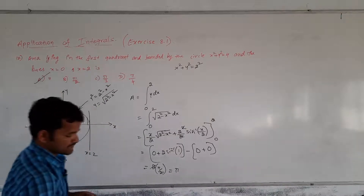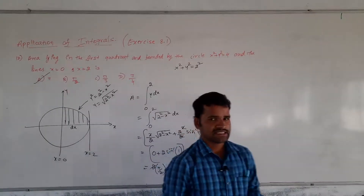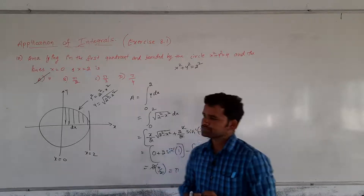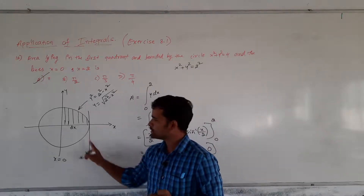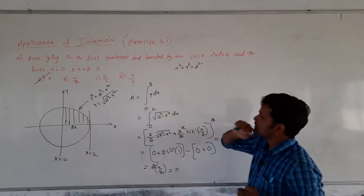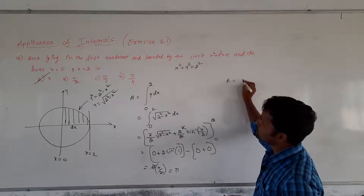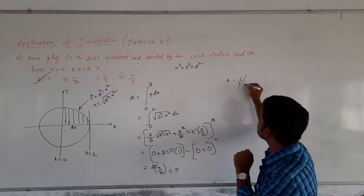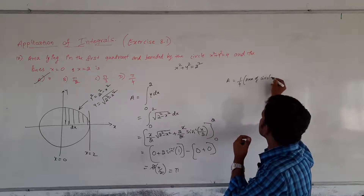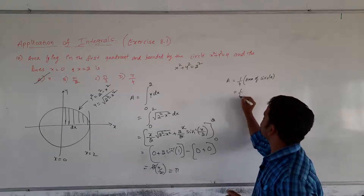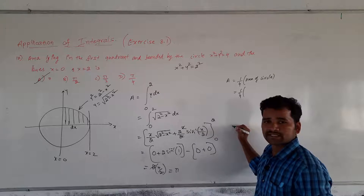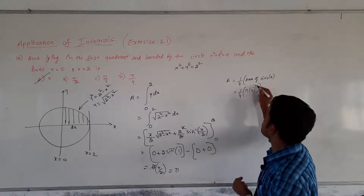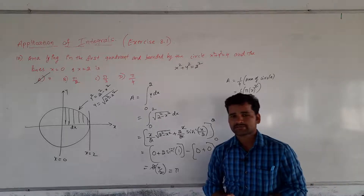Option A is correct. If it appears in CET as a multiple choice question, we can solve it very easily. The area from x = 0 to x = 2 covers the complete first quadrant portion. Required area = (1/4) × area of circle = (1/4) × πr² = (1/4) × π × 4 = π. Within 2 or 3 steps we can solve it.